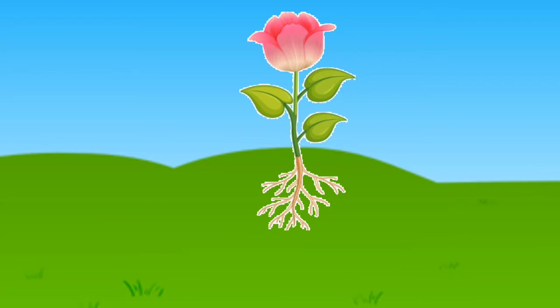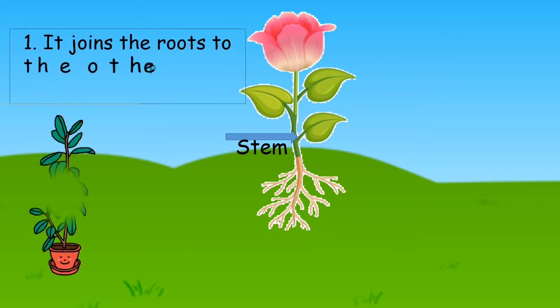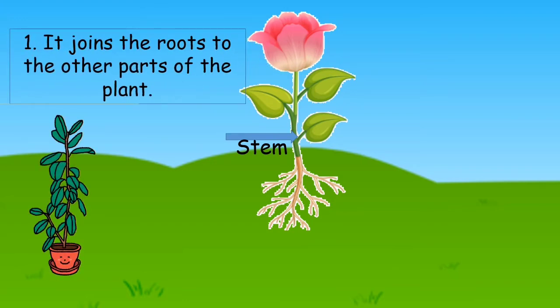The second part is the stem. So what is the function of the stem? It joins the roots to the other parts of the plant.